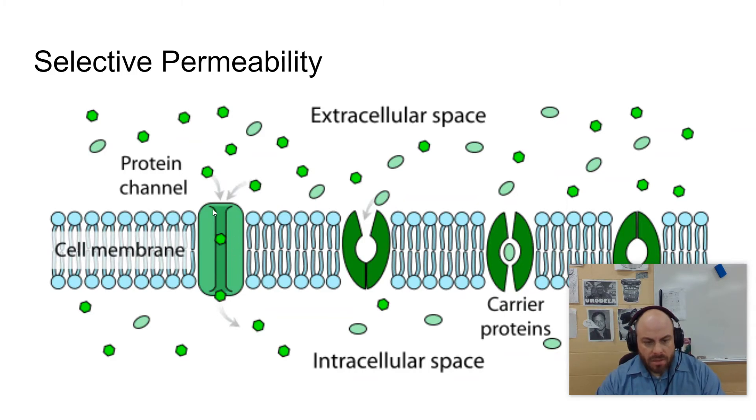this is a channel protein, which is just like a little tube. And these green hexagons have some kind of charge obviously. And so they need to go through a tube in order to get through there. And that tube then has the same sort of charge as that. So that tube is specifically designed for green hexagons.